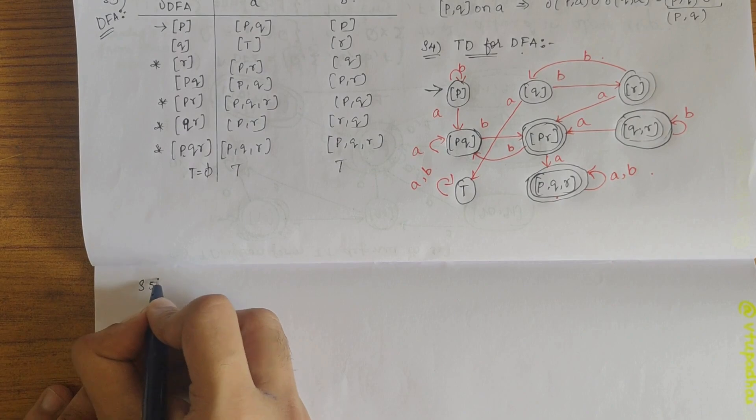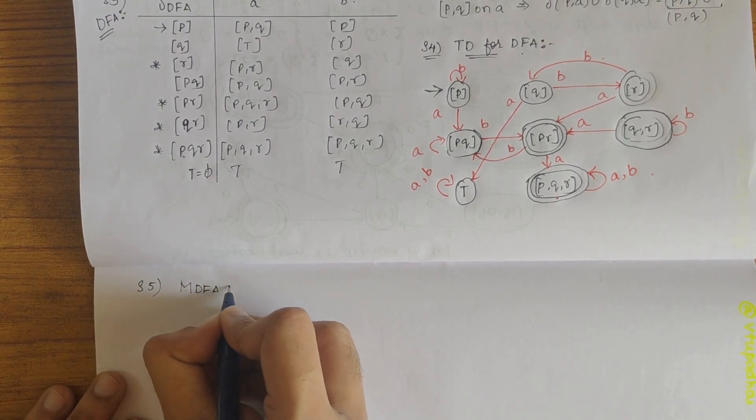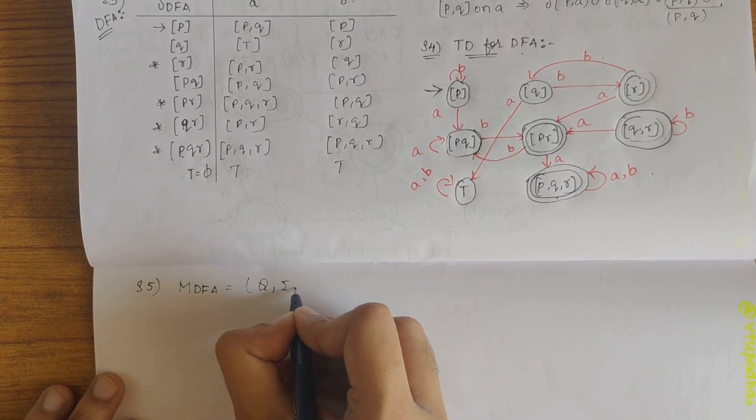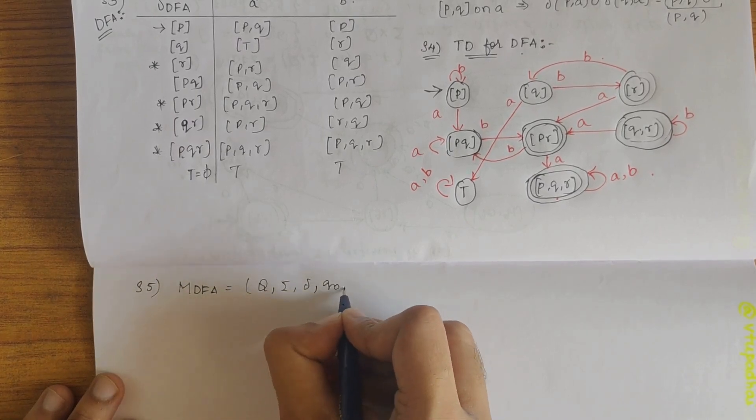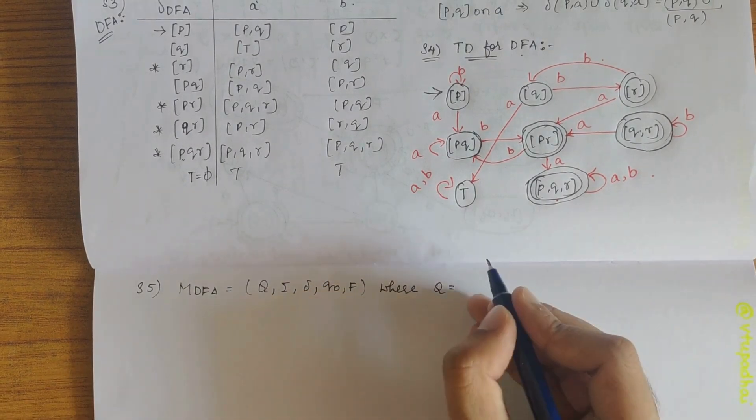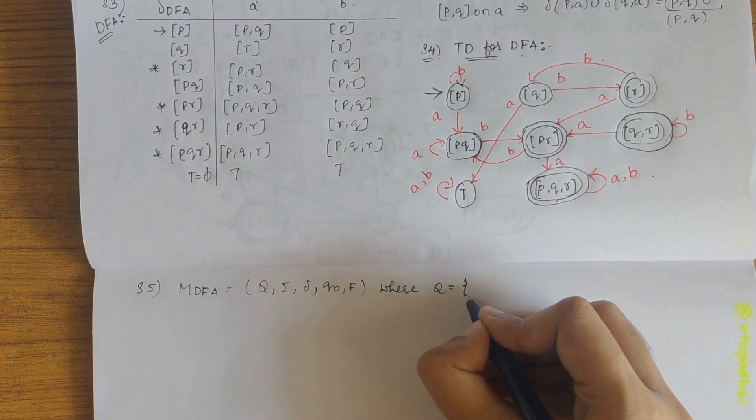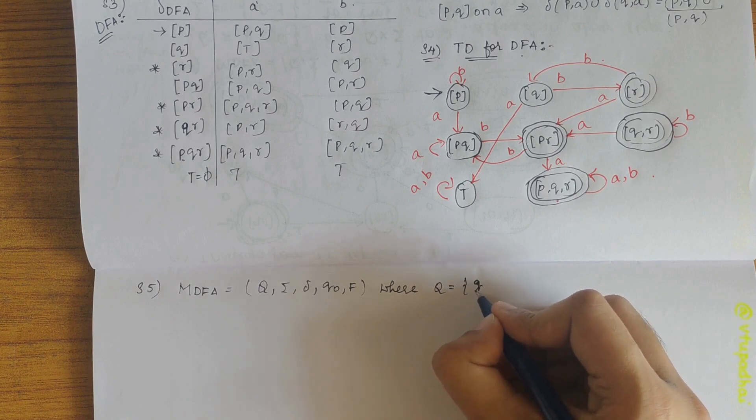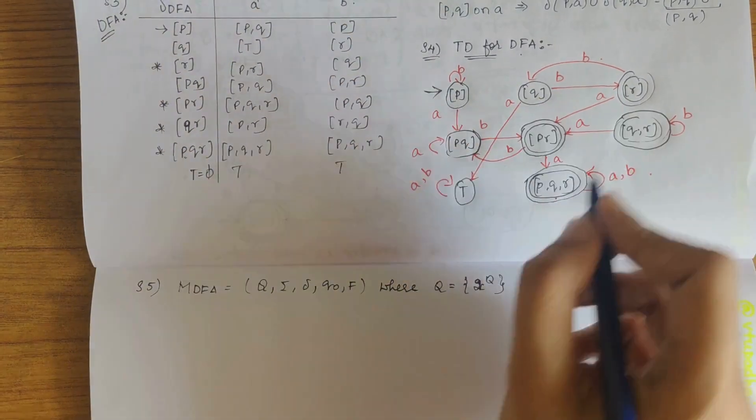Now the last step is to define all the values. So step 5, m dfa is equal to q epsilon naught transition function q naught and f where q is equal to the total number of finite states. Here they are 2 power q states are being considered here.